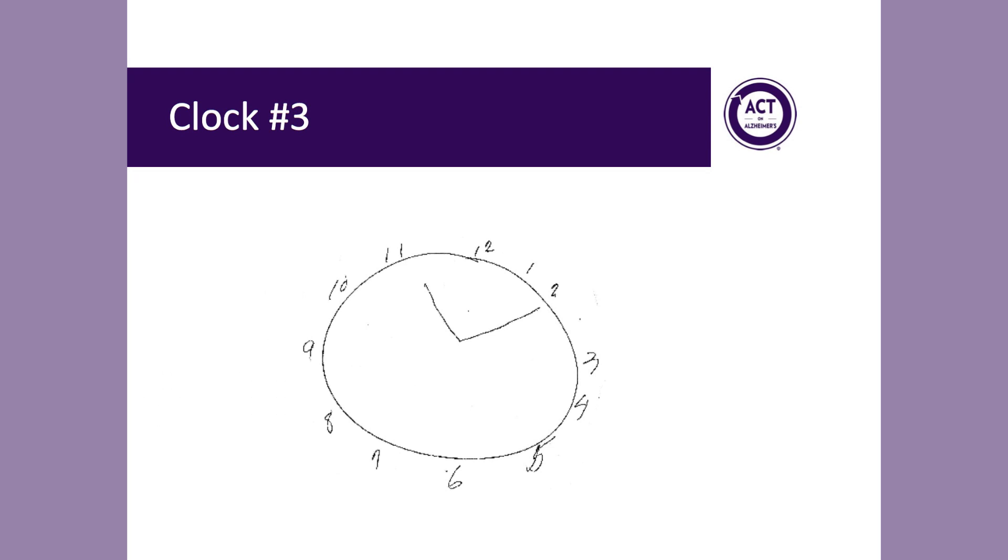The patient who drew clock number 3 drew the numbers on the outside of the circle. For purposes of scoring, it does not matter whether patients include the numbers on the inside or the outside of the circle. You will see that there are minor spacing issues in this example, but the anchor numbers 12, 6, 3, and 9 are all roughly in their correct location. The hands are appropriately set with one pointing to the 11 and one pointing to the 2. This means that this is considered a full credit 2-point clock.